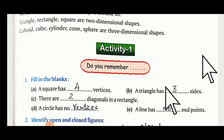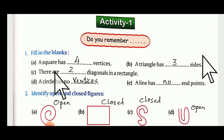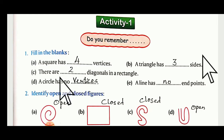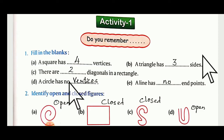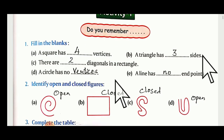A triangle is formed with the help of three lines. There are two diagonals in a rectangle — you can draw two cross lines because opposite sides are equal. A circle has no vertices. A circle can be drawn with a curve, not lines. A line has no end point — you can extend the line as much as you want.